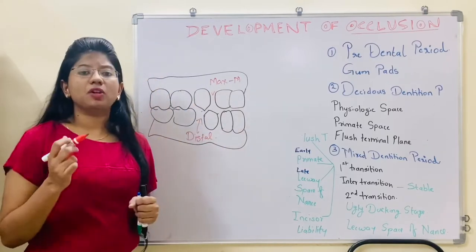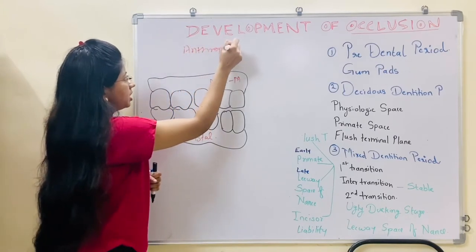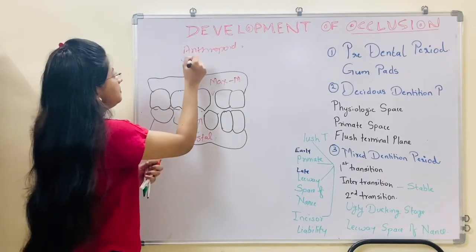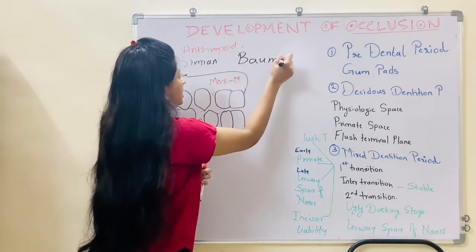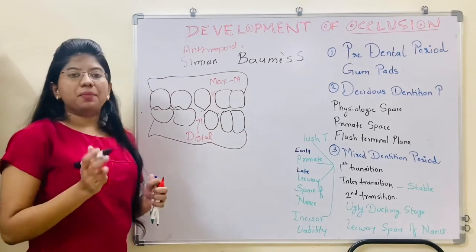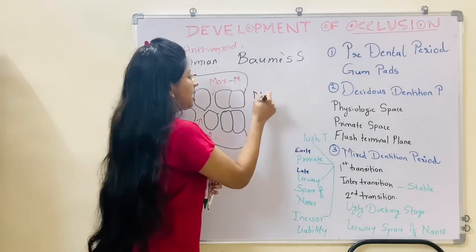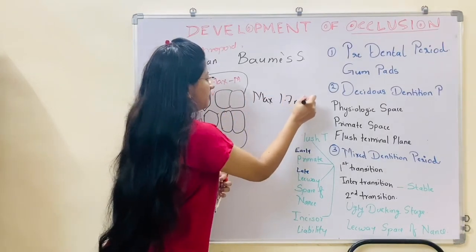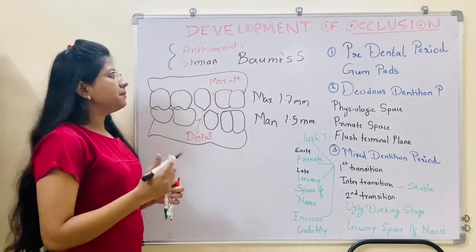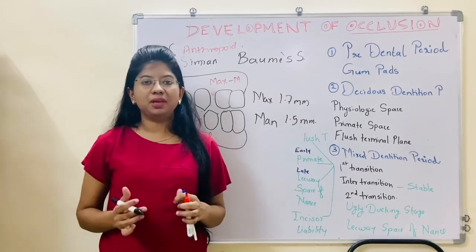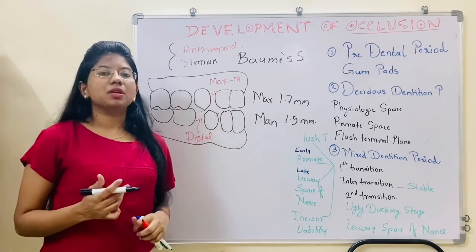Primate space is also called anthropoid space, simian space, or Baume space — knowing these other names is an important MCQ point. In the maxilla, the primate space is about 1.7 mm, while in the mandible it is about 1.5 mm. This primate space is utilized in the mixed dentition period to gain a Class 1 relationship by the permanent mandibular molars.